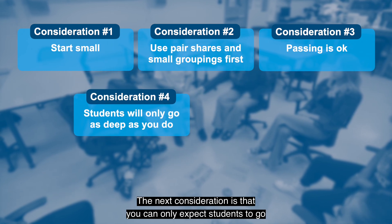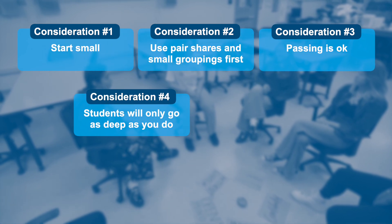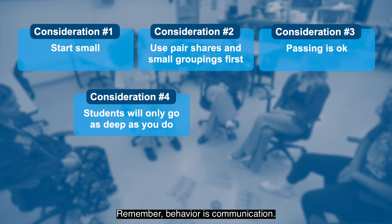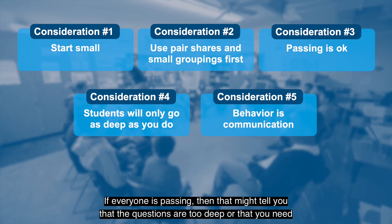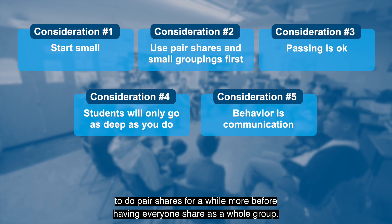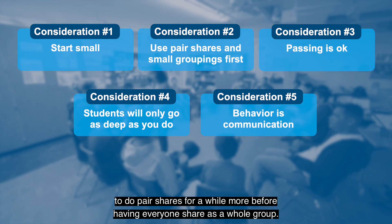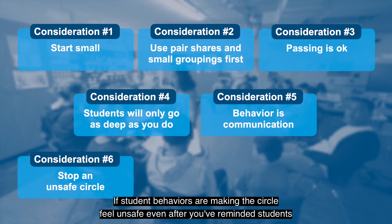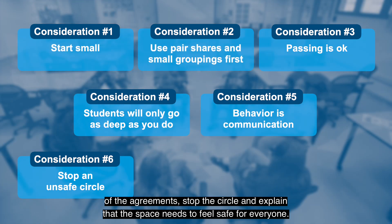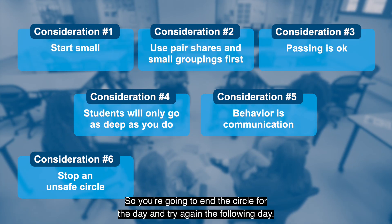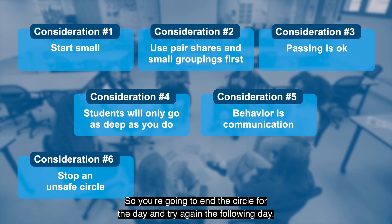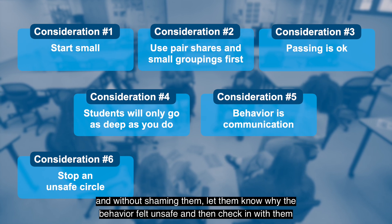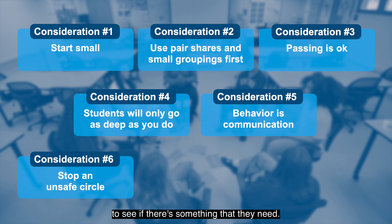Next, you can only expect students to go as deeply as you're willing to go. It's helpful if you answer the question first to set the tone. Remember, behavior is communication — if everyone is passing, that might tell you the questions are too deep or that you need pair shares for a while longer. Next, stop an unsafe circle: if student behaviors are making the circle feel unsafe even after you've reminded students of the agreements, stop the circle, explain that the space needs to feel safe for everyone, and try again the following day. Then speak to the student privately — without shaming them — let them know why the behavior felt unsafe and check in to see if there's something they need.